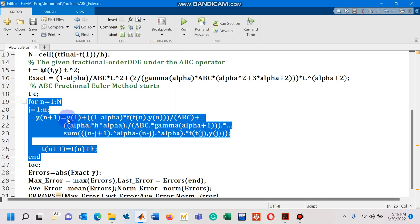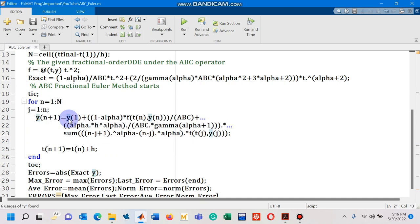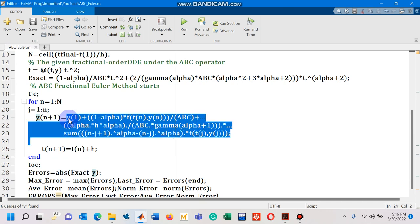So, you can see that this is the for loop which is required to simulate or to design the code for the said numerical scheme. So, you can compare the right-hand side of this equation with the numerical method called fractional Euler method given in the research paper by equation 33.